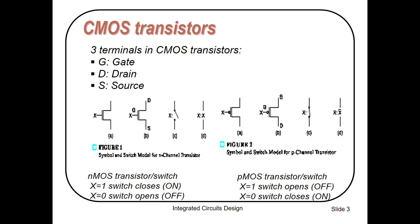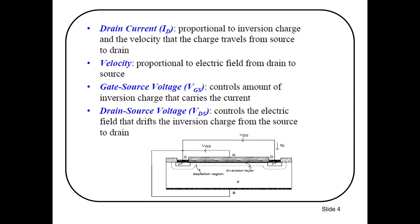As we know, MOSFET is a three-terminal device having three terminals: gate, drain, and source. In figure 1 and figure 2 you can see the variety of NMOS transistors and PMOS transistors. In figure 1 it shows the N-channel or NMOS transistor. When you apply a high gate signal (X=1), your MOSFET will turn on. In the PMOS transistor, when you apply a low gate signal (X=0), your device will turn on.